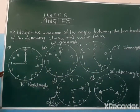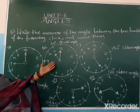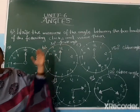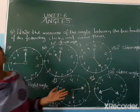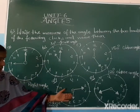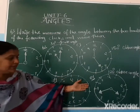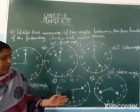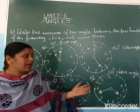Summary: Clock A shows 9 o'clock — right angle, 90 degrees. Clock B shows 11 o'clock — 30 degrees, acute angle. Clock C shows 5 o'clock — 150 degrees, obtuse angle. Clock D shows 2:30 — 105 degrees, obtuse angle. Clock E shows 4:45 — 120 degrees, also an obtuse angle.